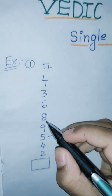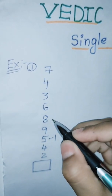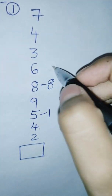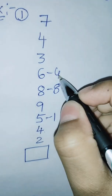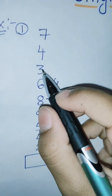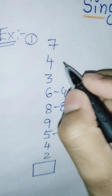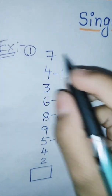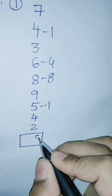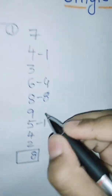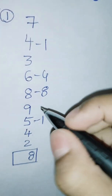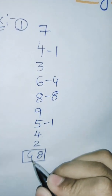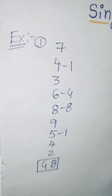10 plus 8 equals 18. 18, it is 8. 8 plus 6 equals 14. 4 plus 3 equals 7. 7 plus 4 equals level. 1 plus 7 equals 8. And count the dashes: 1, 2, 3, 4. The dashes is 4. We want to write 4. The answer is 48.